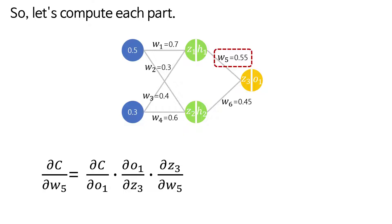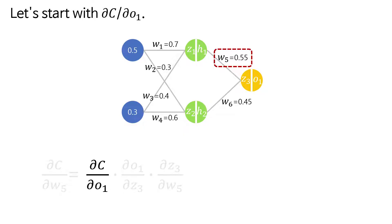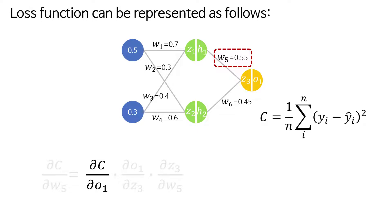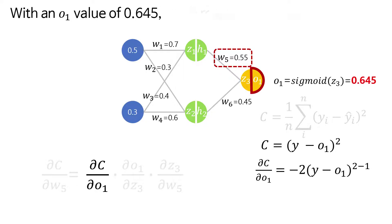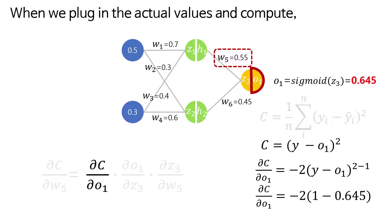So let's compute each part. Let's start with ∂c/∂o1. Our loss function can be represented as follows. Differentiating the formula with respect to o1 gives, with an o1 value of 0.645, when we plug in the actual values and compute, ∂c/∂o1 is -0.71.